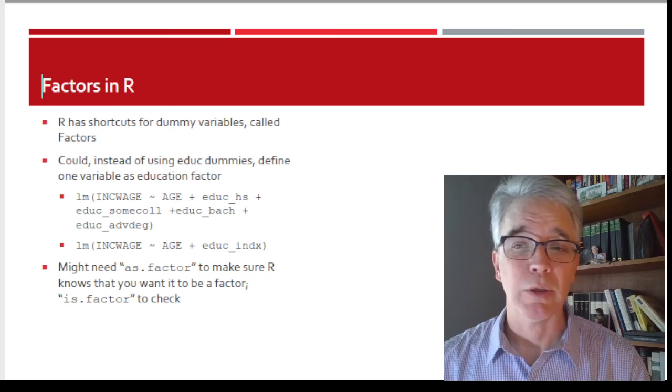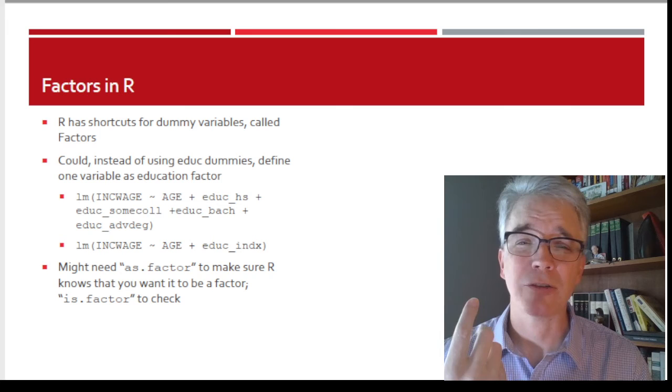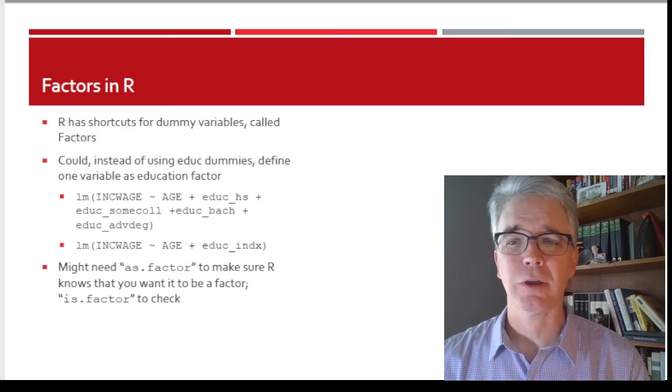You could also create these into an index. You just put, so maybe zero is if they have not even a high school degree, and then one for somebody who has a high school degree, and two if they have some college, and three if they have a bachelor's degree, and four if they have an advanced degree.